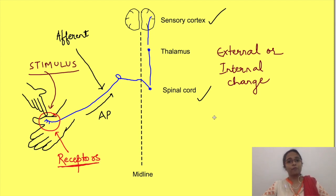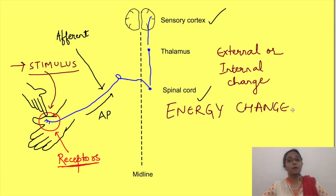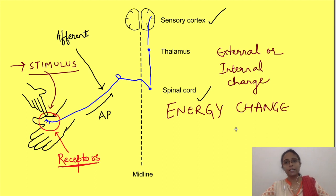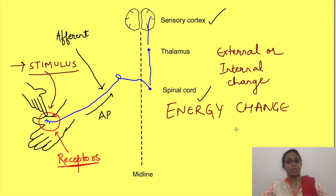Stimuli are of various types depending on the type of energy change. For example, there can be a mechanical stimulus, chemical stimulus, or thermal stimulus. To detect these various types of stimuli, there must be various types of receptors. The body does have receptors for detecting different types of energies, but once a receptor detects a stimulus, it must be transmitted to the CNS in a language the CNS understands — that is, action potentials.